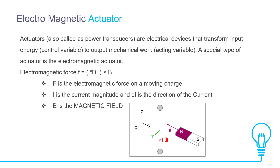Electromagnetic actuators, also called power transducers, are electrical devices that transform input energy — the control variable — to output mechanical work, the acting variable. A special type is the electromagnetic actuator. The electromagnetic force formula is: F = I × dL × B, where F is the electromagnetic force on a moving charge, I is the current magnitude, dL is the direction of the current, and B is the magnetic field.